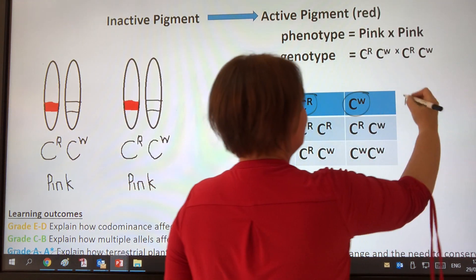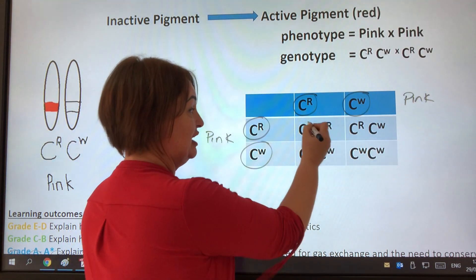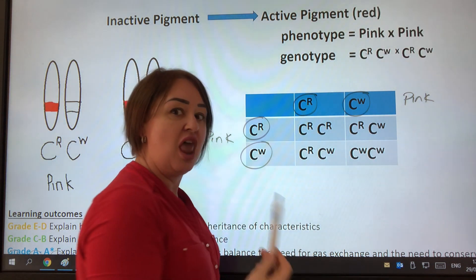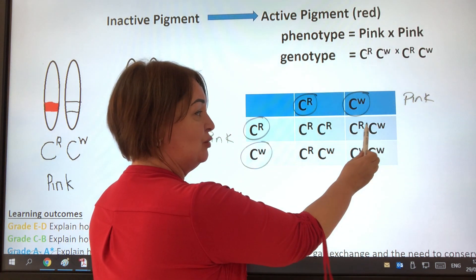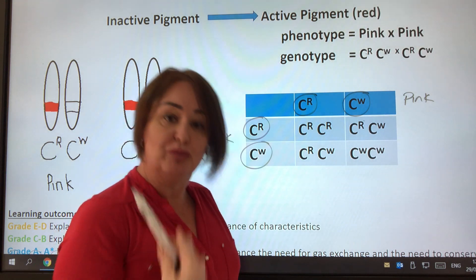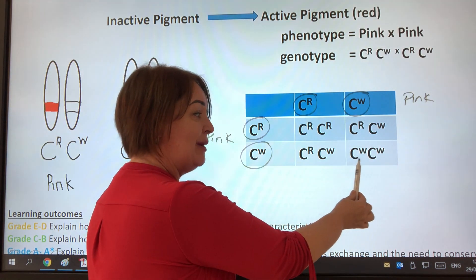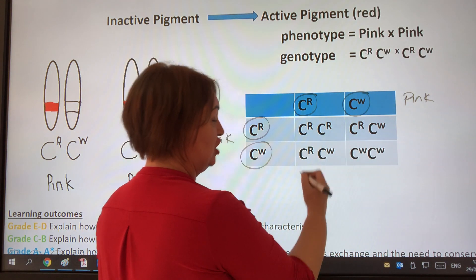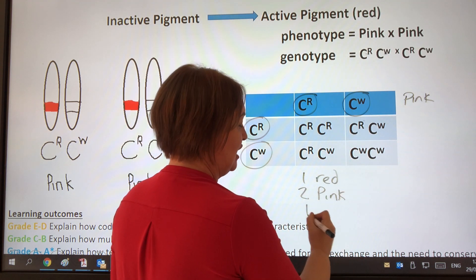When these come together, what we've got is a pink here times a pink over here. When we actually look at what is produced, this one here has the allele for the enzyme and the allele for the enzyme. A lot of enzyme is going to be produced, we're going to get very red flowers. Here we've got the allele for the enzyme, but we've also got the effect of no enzyme, so some enzyme is produced, so some of the pigments changed, we get a pink flower. Here is the same, and here we've got no enzyme, no enzyme, so the inactive pigment doesn't change to the red pigment. So I have got one red, I've got two pink, and I've got one white.